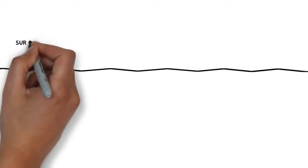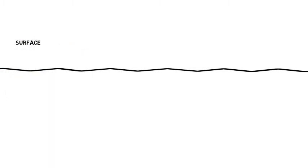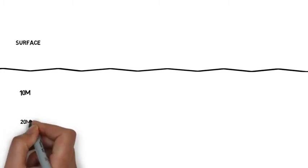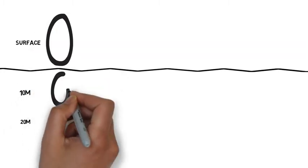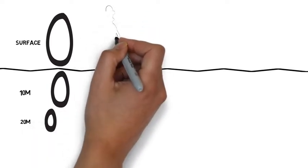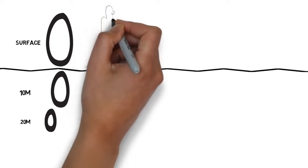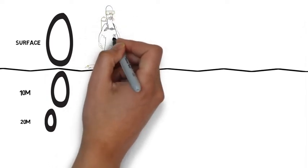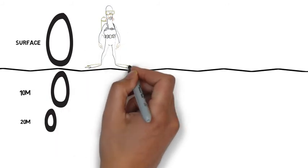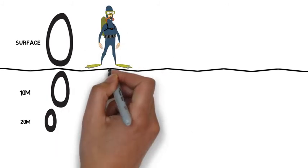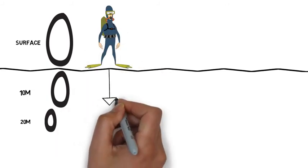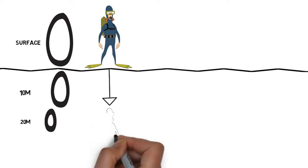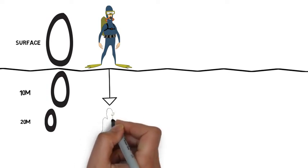So if we have the surface, and then 10 meters and 20 meters drawn up, and we imagine what happens to different things when they move around, a balloon taken from the surface to 20 meters, hopefully by now you know it's going to get smaller. Also, you know that divers are going to be affected in different ways as they descend. What are some of the ways that a diver may be affected as they descend from the surface down to, say, a depth of 20 meters?